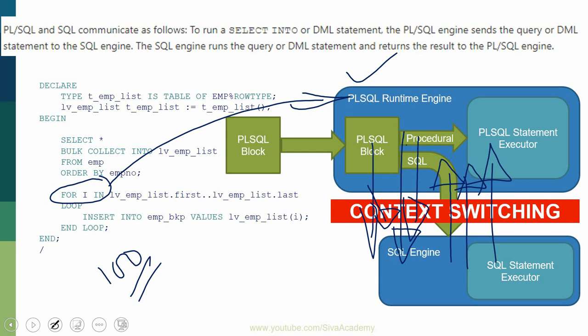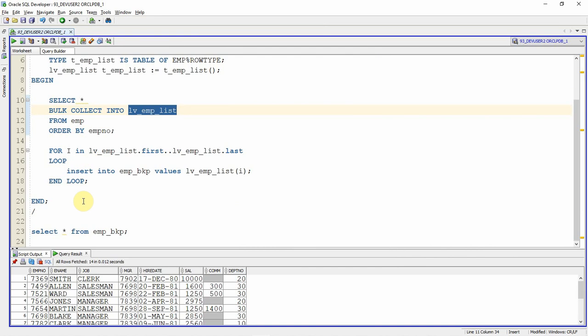To reduce context switching, instead of FOR we can use the FORALL keyword. FORALL performs the same operation without context switching between the SQL and PL/SQL engines. Let us now reimplement the same logic using the FORALL keyword. Instead of using FOR, I will use FORALL.